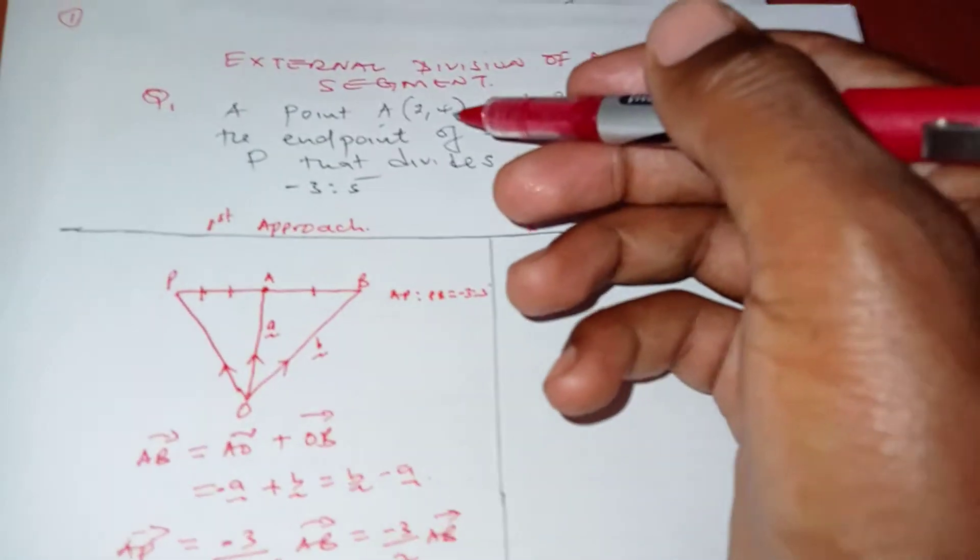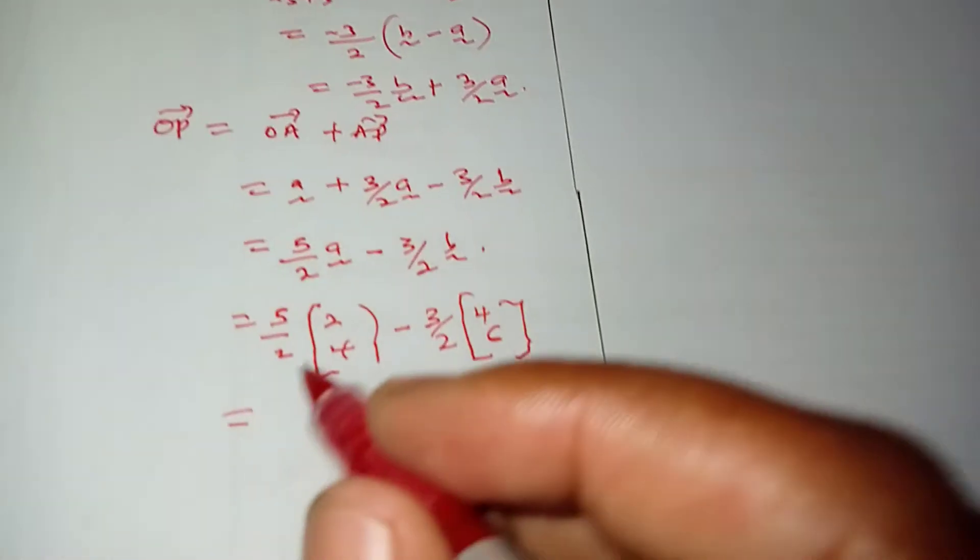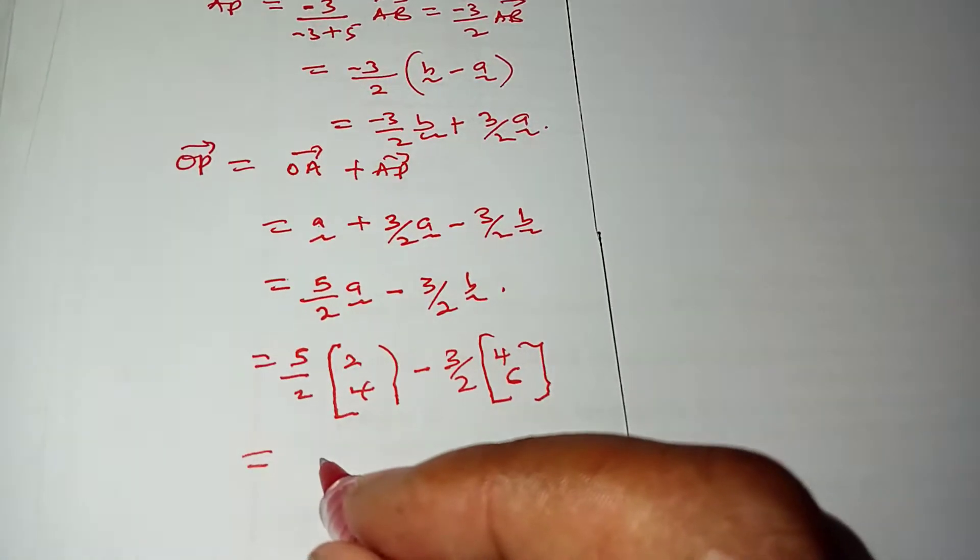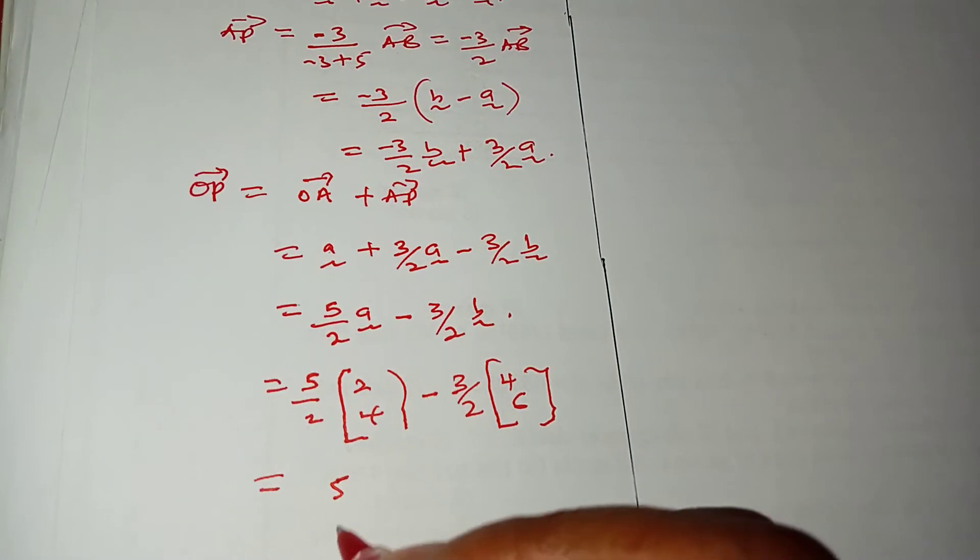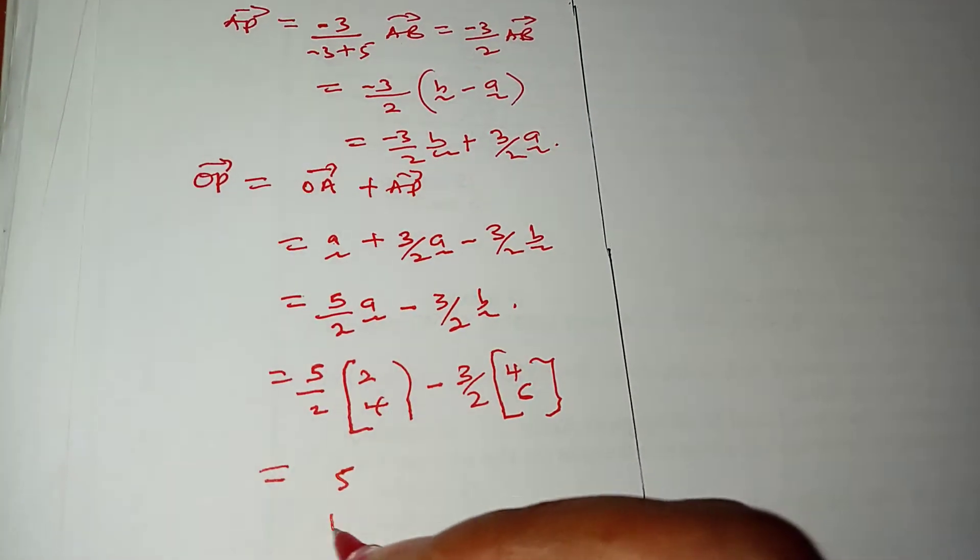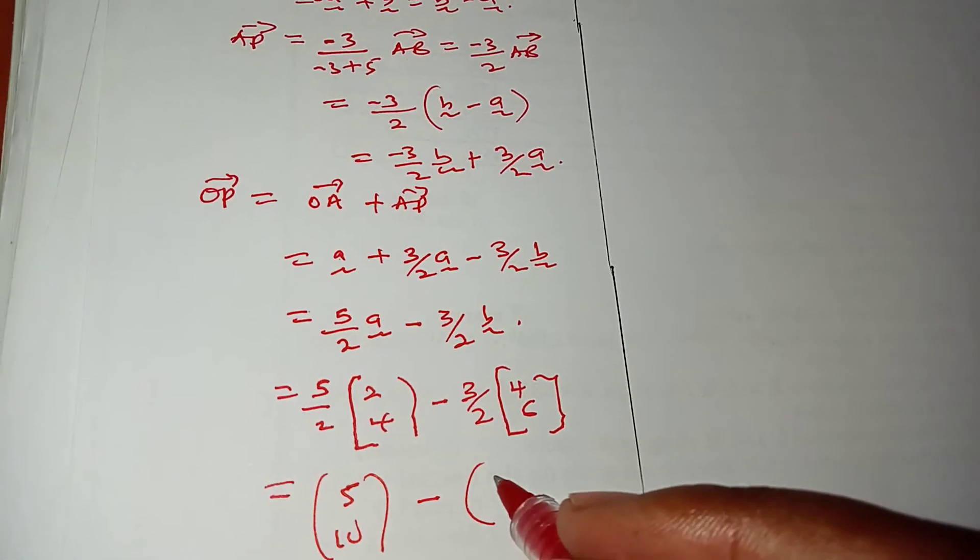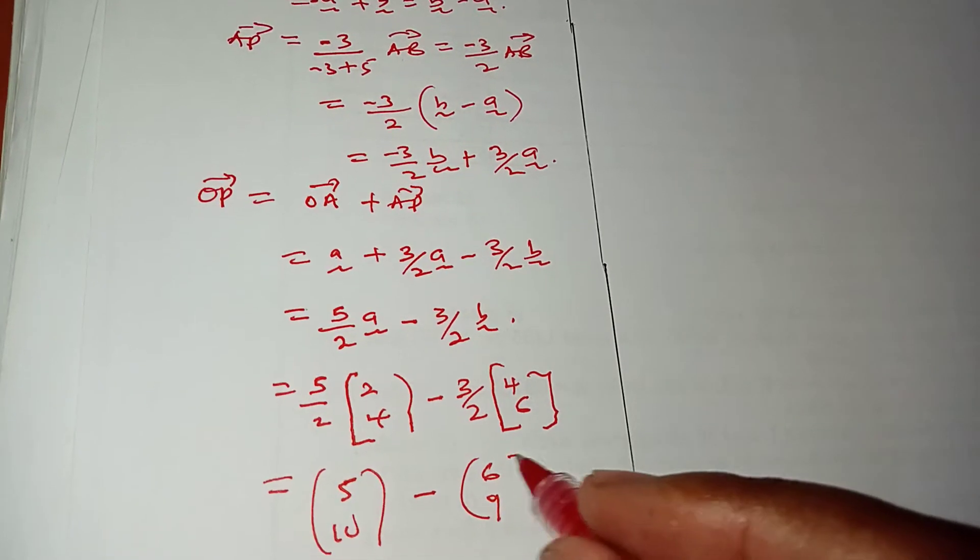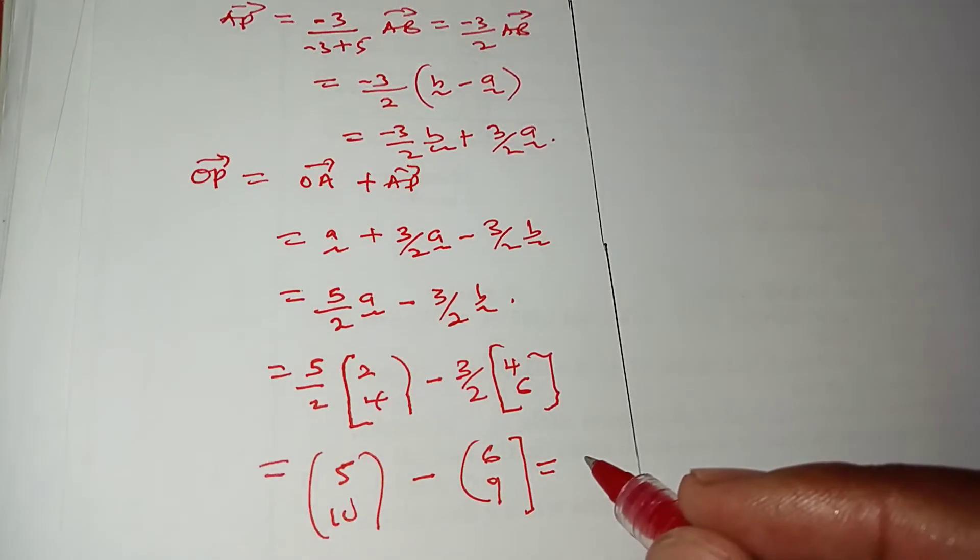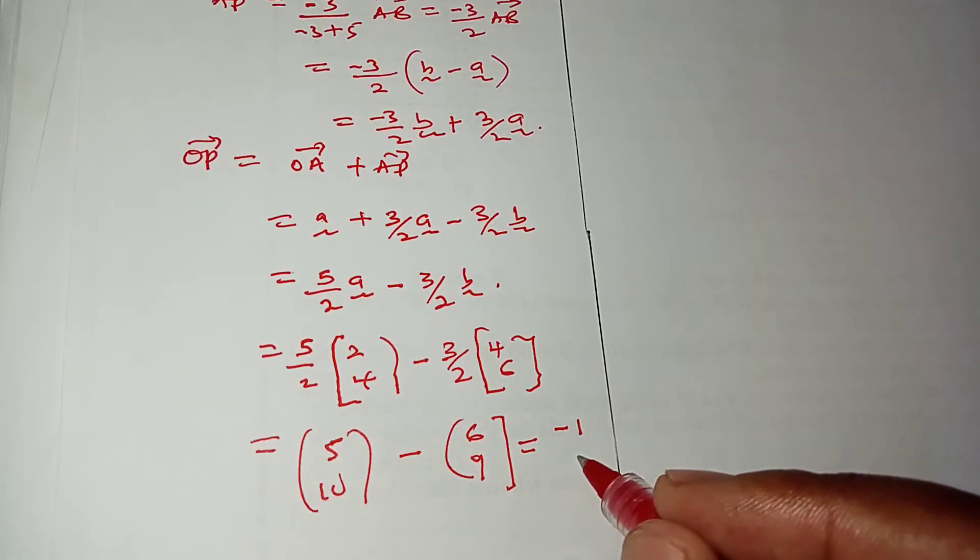Then I simplify here. This is 5/2 times 2, that's 5. 5/2 times 4, that's 10. Then -3/2 times 4, that's 6. 3/2 times 6, you have 9. When you simplify, you get 5 - 6, that's -1. 10 - 9, you get 1.